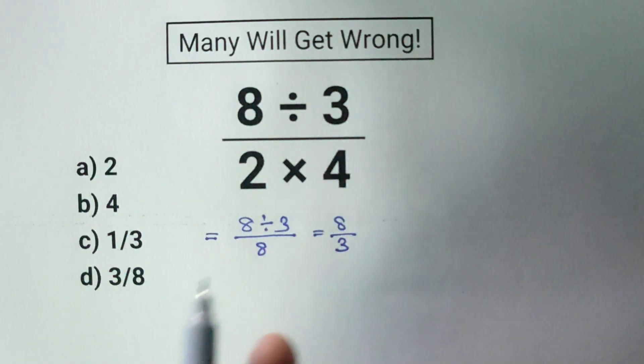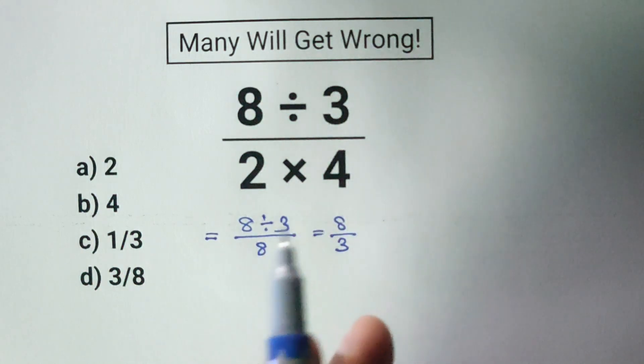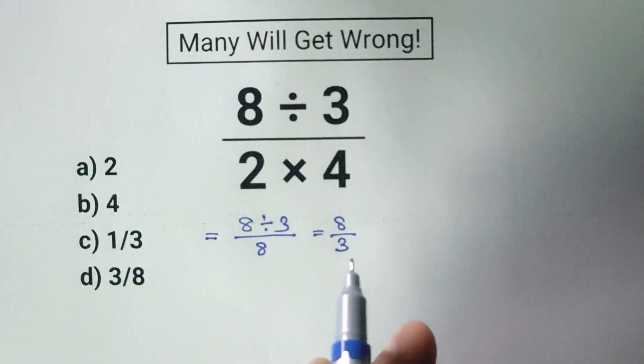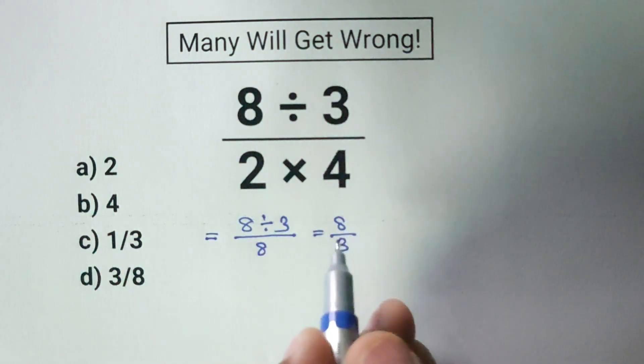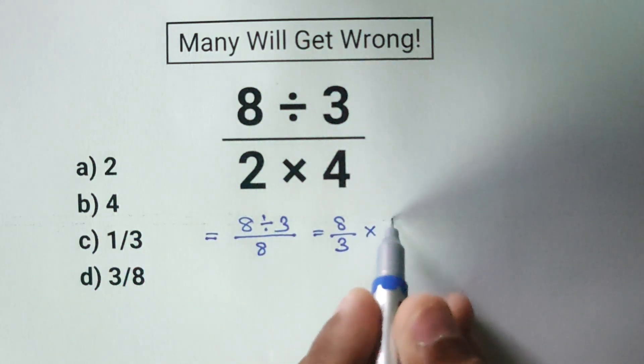At this point, we are dividing by 8. But remember, dividing by a number is the same as multiplying by its reciprocal. That just means flipping the number upside down. So instead of dividing by 8, we'll multiply by 1 over 8.